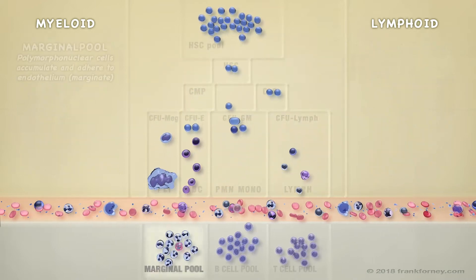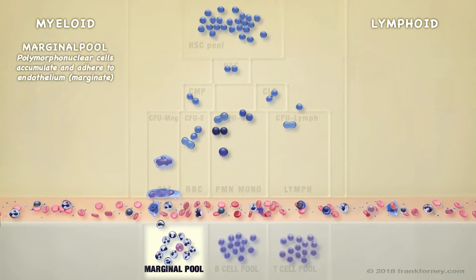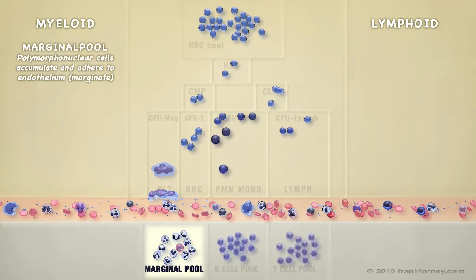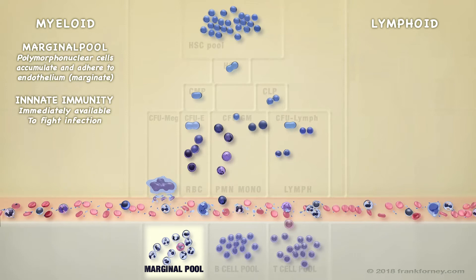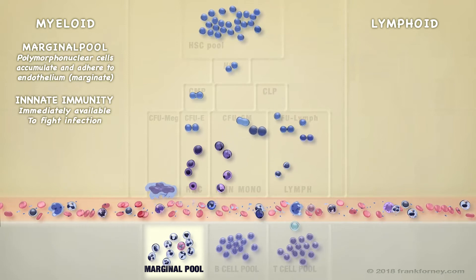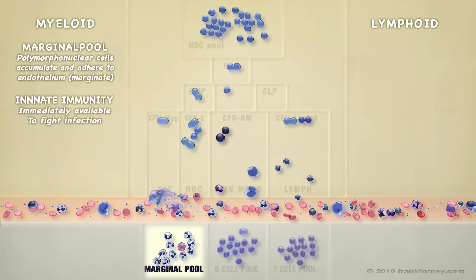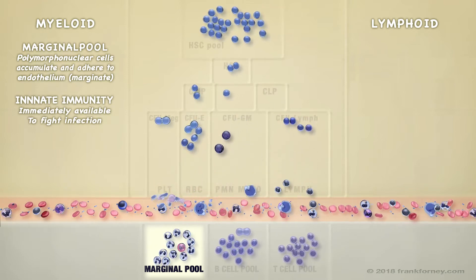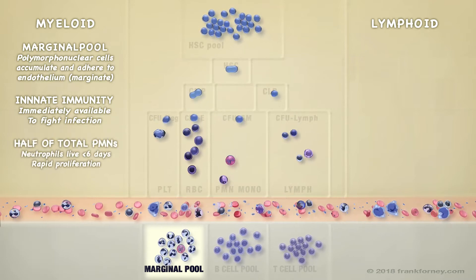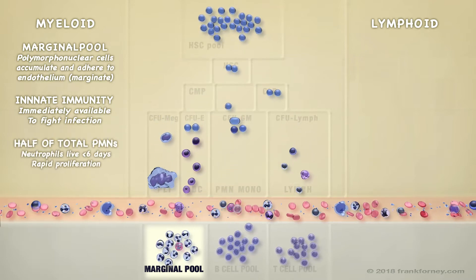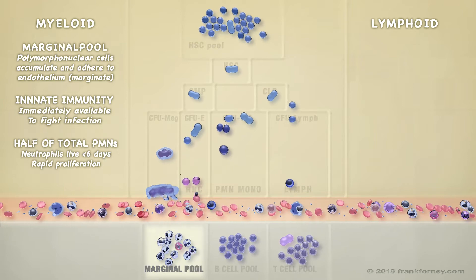Many white blood cells are sequestered in tissues and organs. Neutrophils and other granulocytes adhere to vessel walls of the pulmonary circulation. This segregated population approximately equals what's found in peripheral blood.